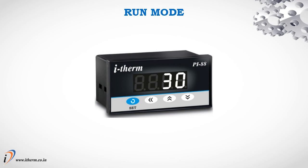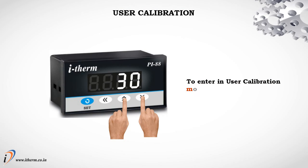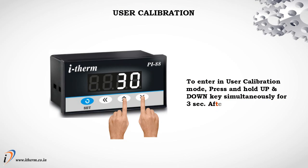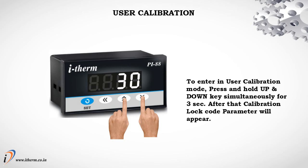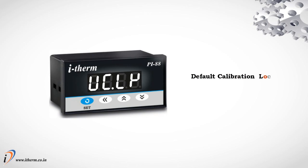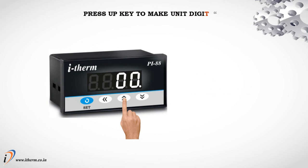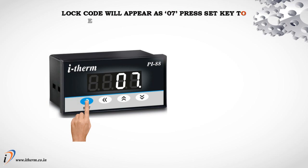Run Mode. To enter user calibration mode, press and hold the Up and Down keys simultaneously for 3 seconds. After that, the calibration lock code parameter will appear. The default calibration lock code is 7. Press the Up key to make the unit digit 7. The lock code will appear as 07. Press the Set key to enter the calibration parameters.